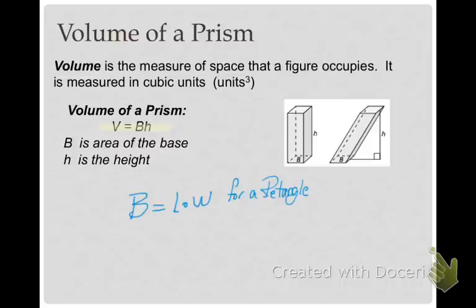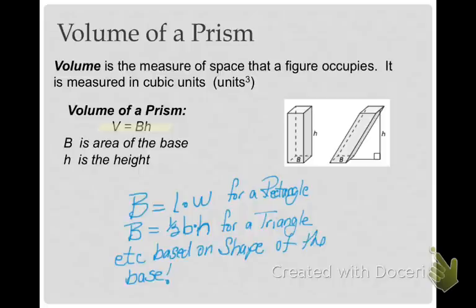When the base is a rectangle, you're going to use length times width. Now if your base was a triangle, you would use one half base times height for your capital B. And if you had a regular polygon, you would use the formulas that we learned for the area of regular polygons. So it all depends on what your base is.